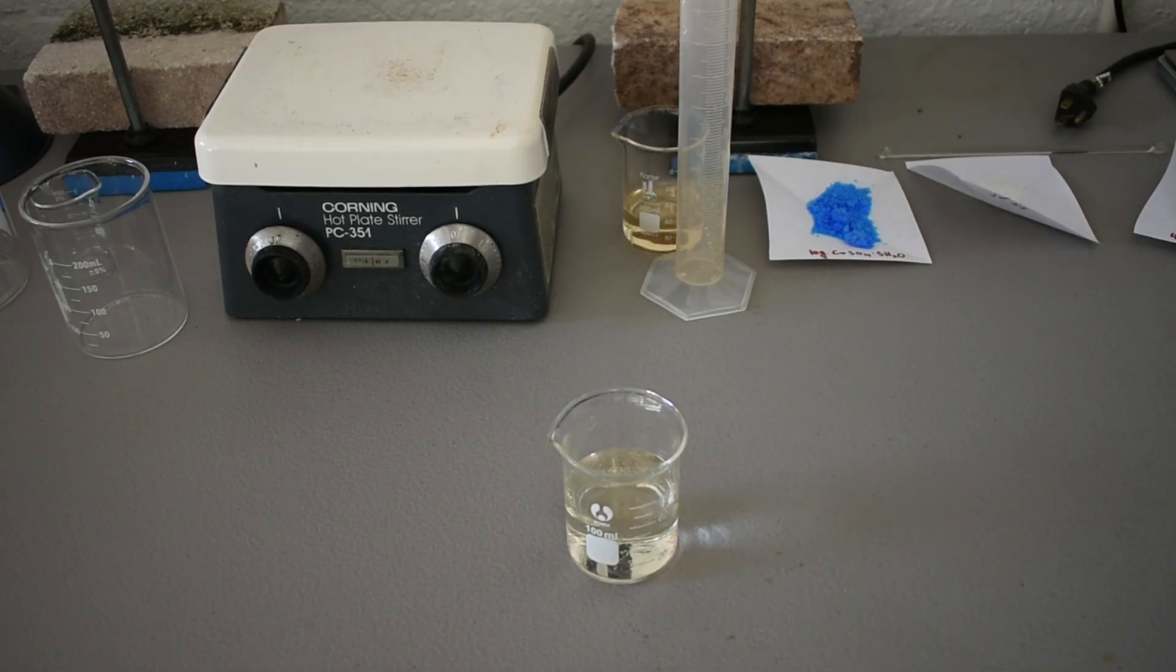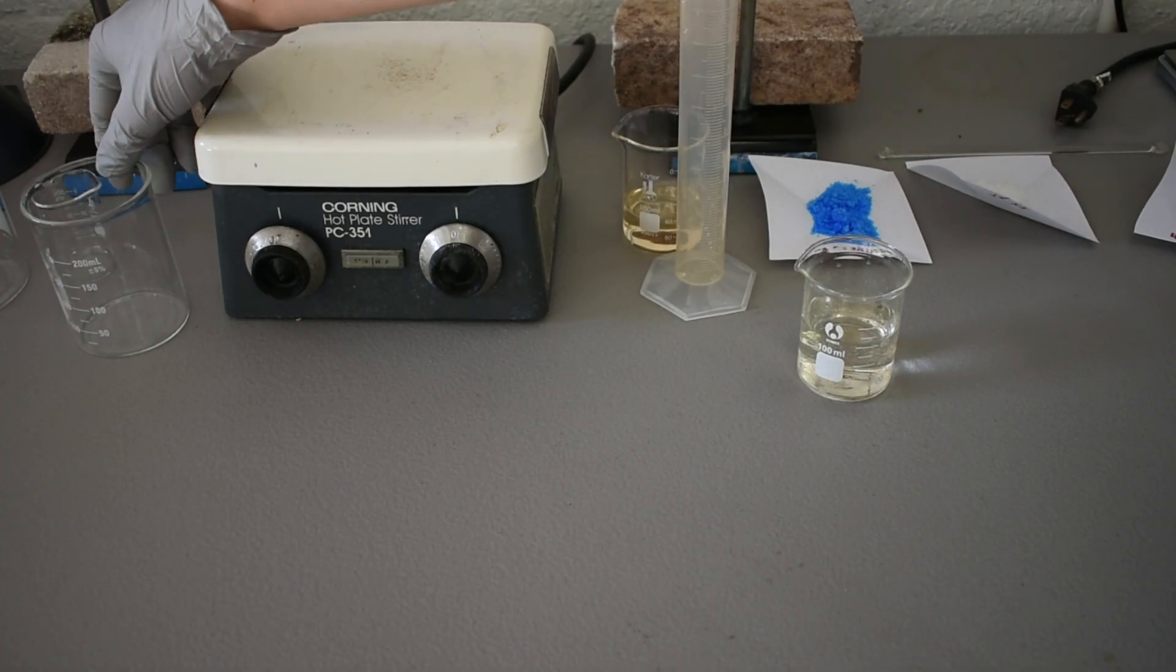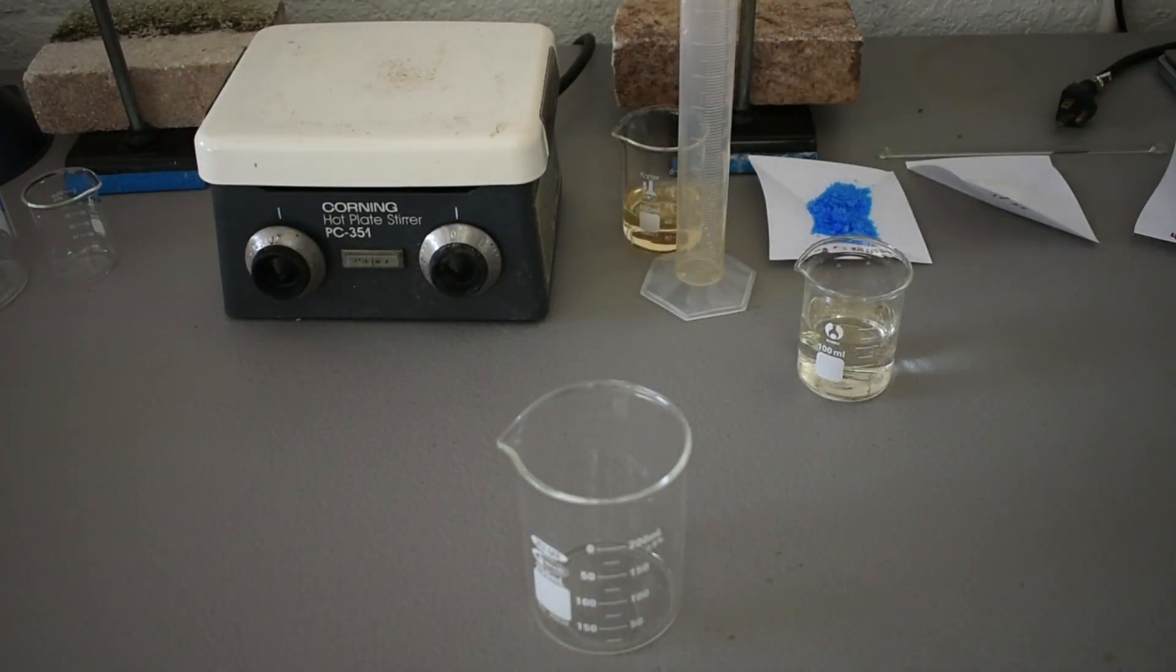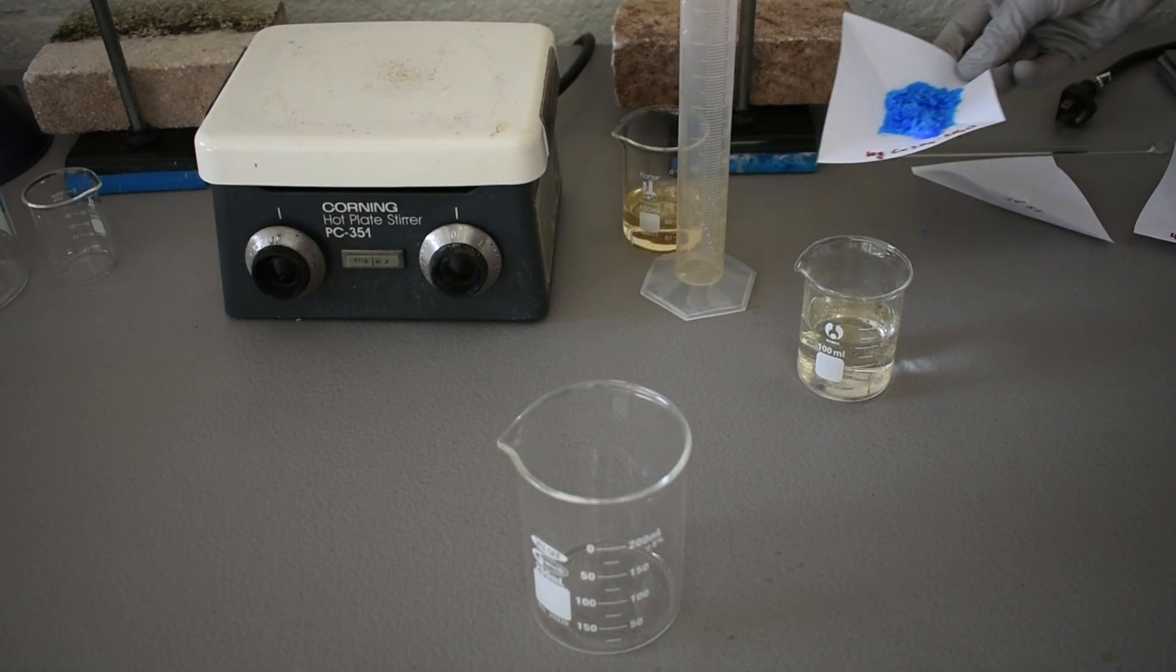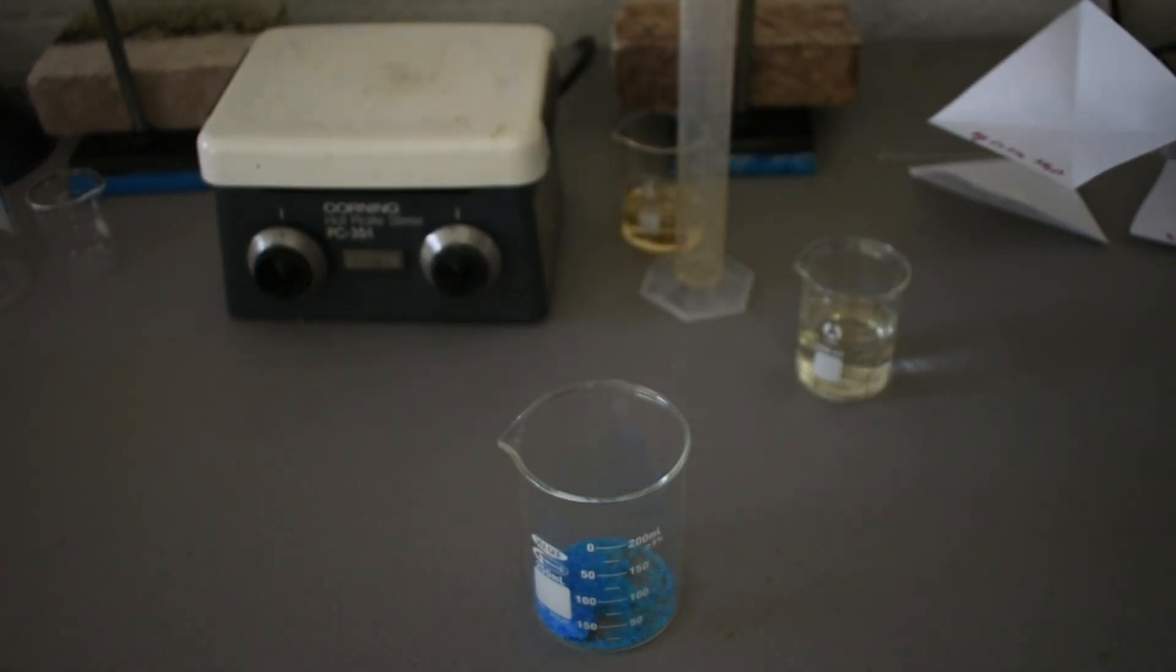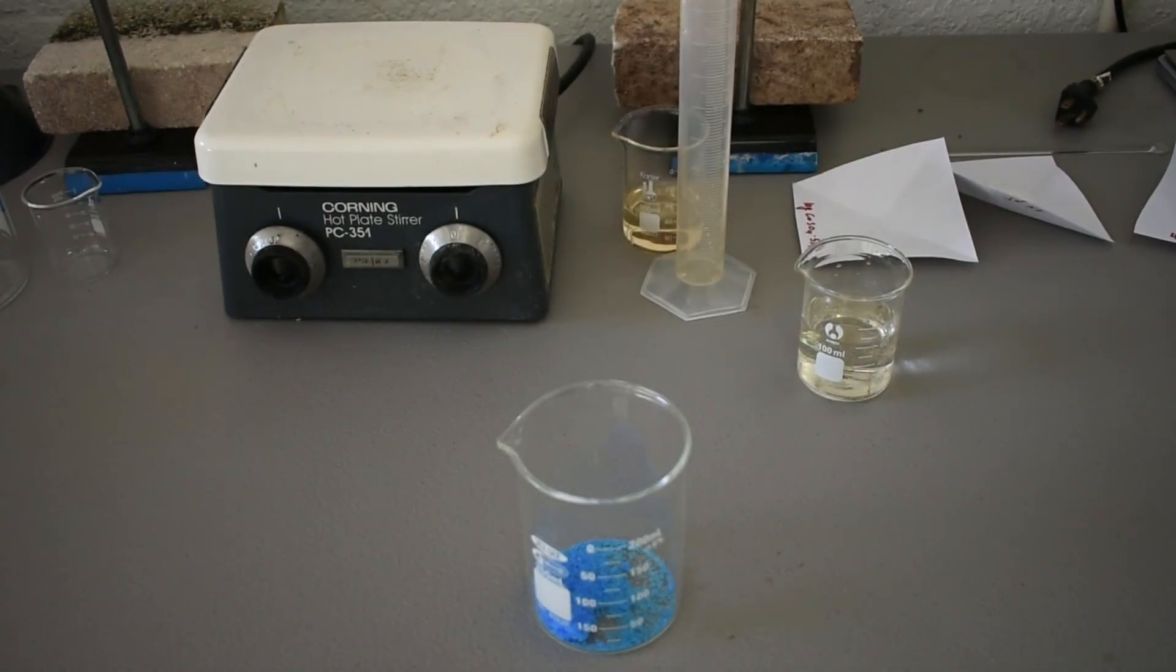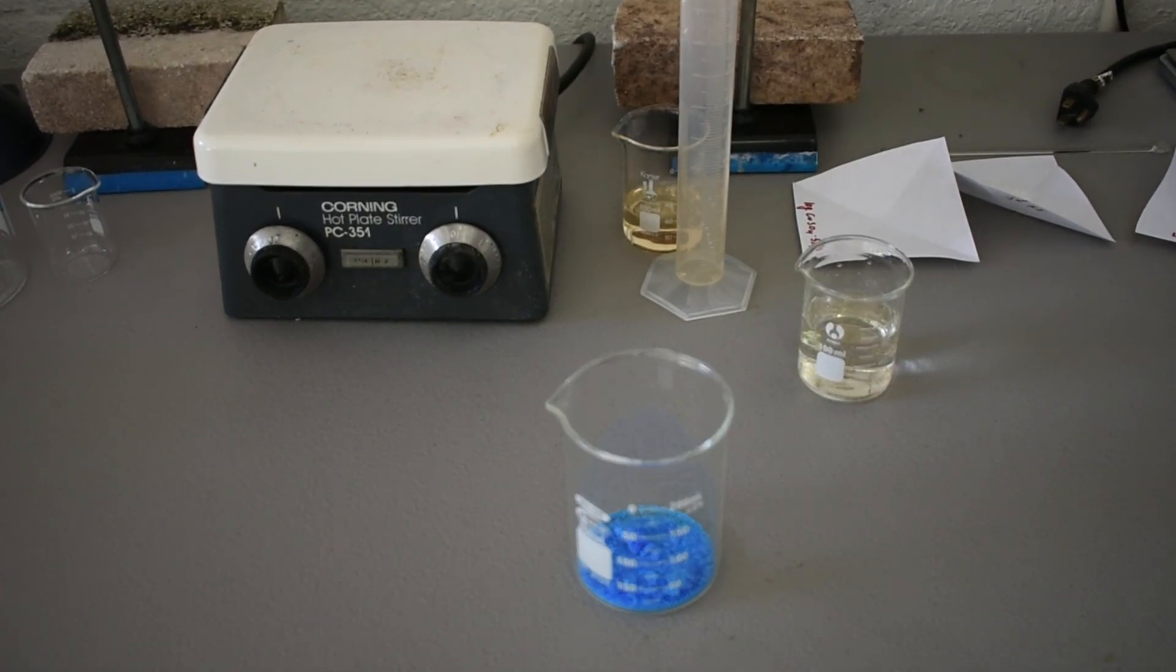Now what we're going to do is prepare a separate solution of the copper sulfate. So we're going to put our 10 grams of copper sulfate pentahydrate, and we're going to dissolve that in an arbitrary amount of water, just enough so it all dissolves.